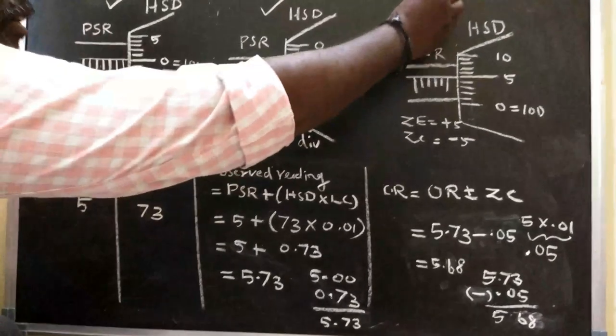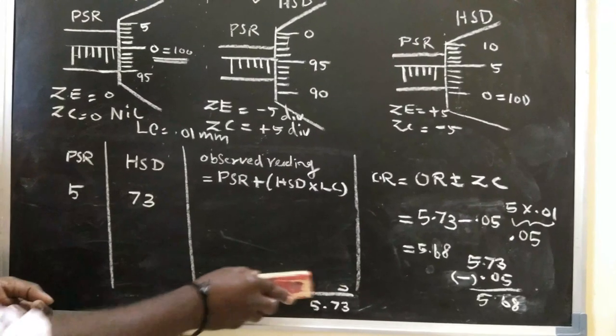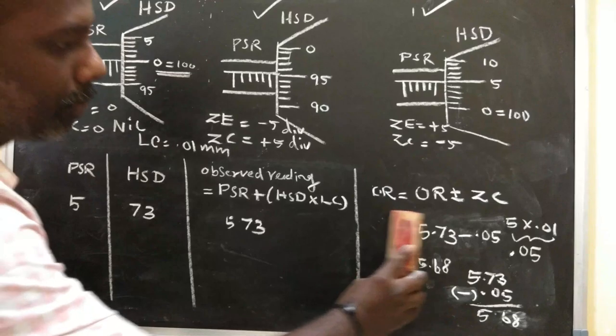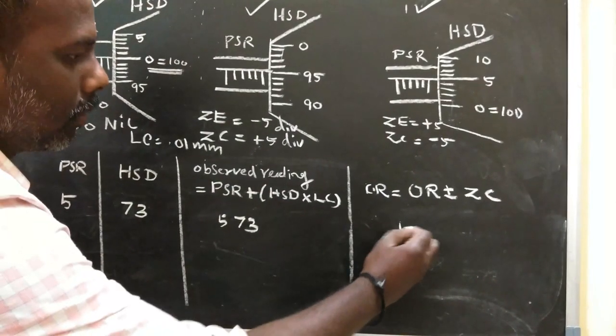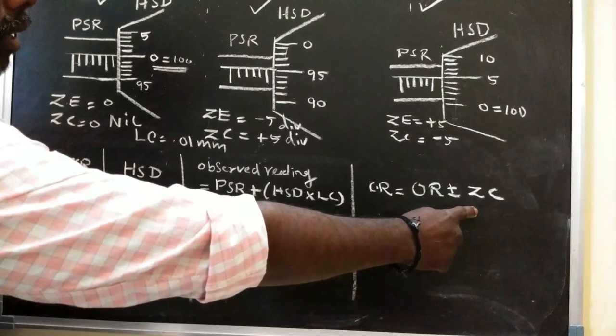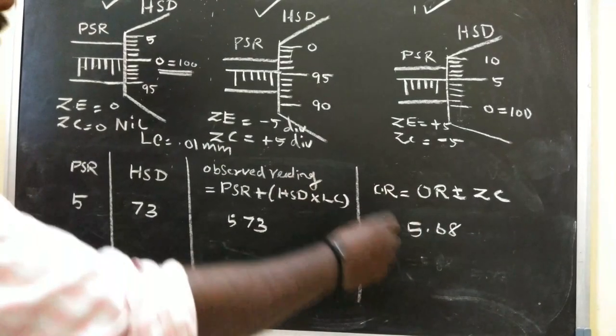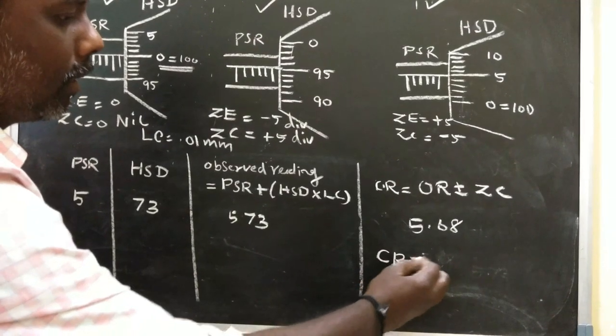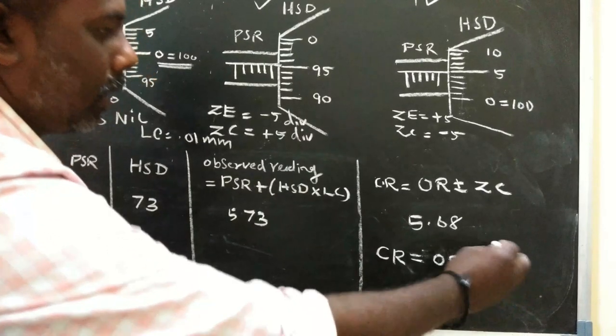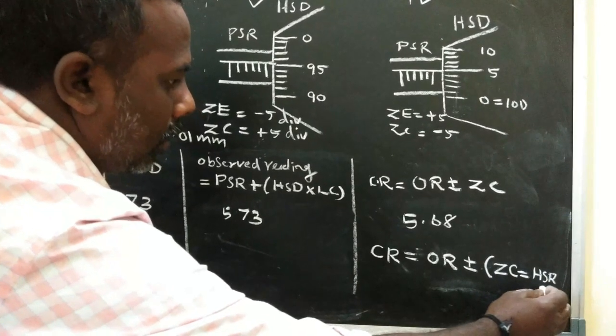Remember the key formula: correct reading equals observed reading plus or minus the correction, where correction equals error times least count. The zero correction comes from the head scale divisions. Apply this formula consistently for all measurements.